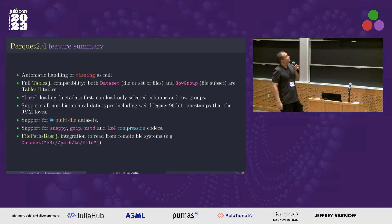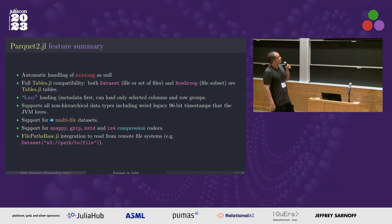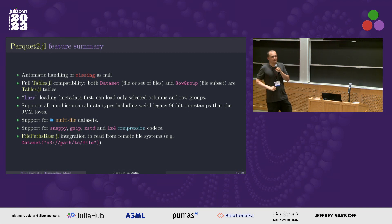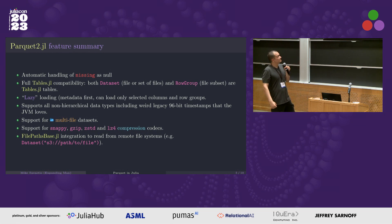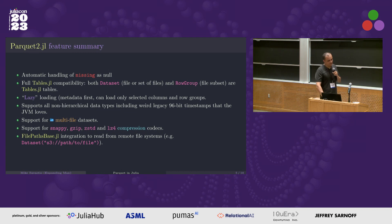A brief overview of the features: it speaks the standard language of the Julia data ecosystem, where it knows that missings are nulls and recognizes anything that's Tables.jl compatible. It's lazy by default, so you can load only certain columns. It supports all of the non-hierarchical data types that Parquet supports, so there's quite a lot there — including weird things like unusual timestamp formats. There is support for multi-file datasets, though it's somewhat limited. Right now it supports Snappy, gzip, zstd, and lz4 compression. It also understands path strings via FilePath, so you can load from S3 or similar without trouble.